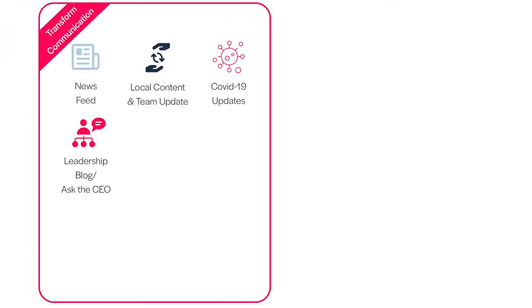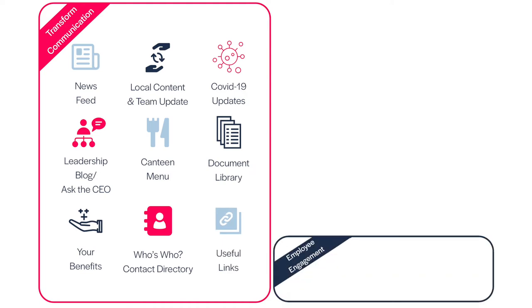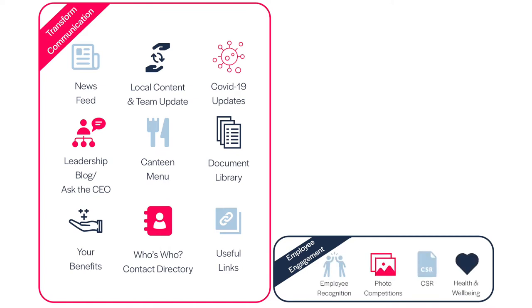The Thrive app is built with three key objectives. Transforming communication: keeping people informed and pushing real-time updates and information. Employee engagement: empowering, encouraging, and engaging with every employee by keeping them connected to your organization's culture, their role, and each other.